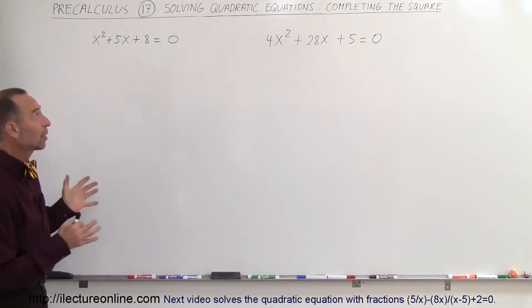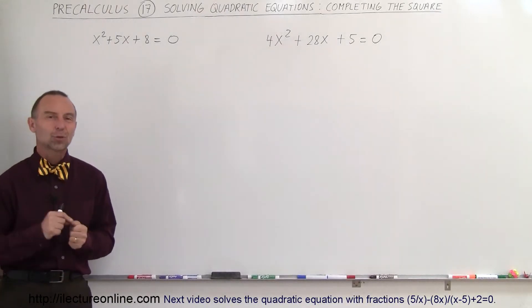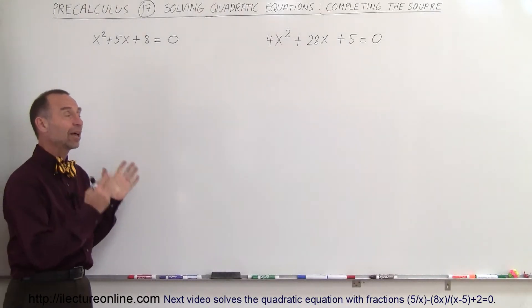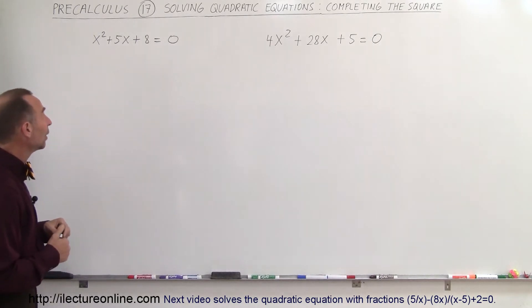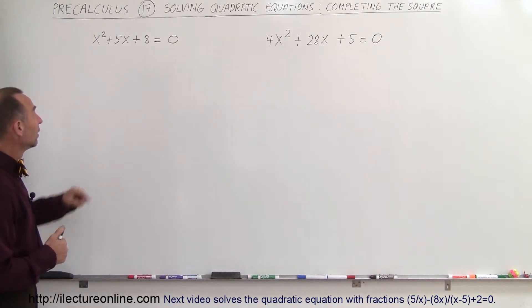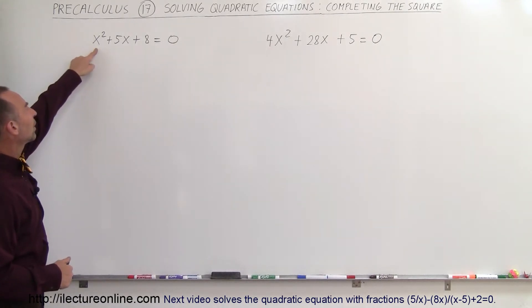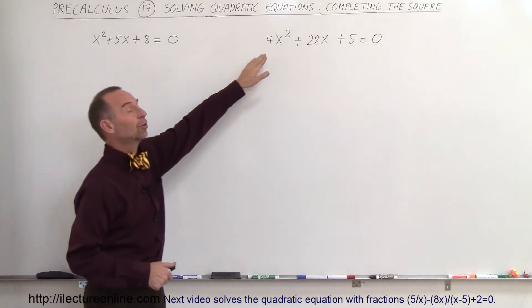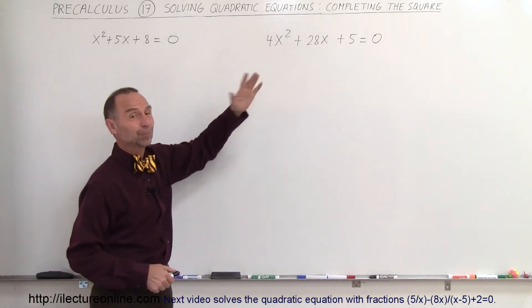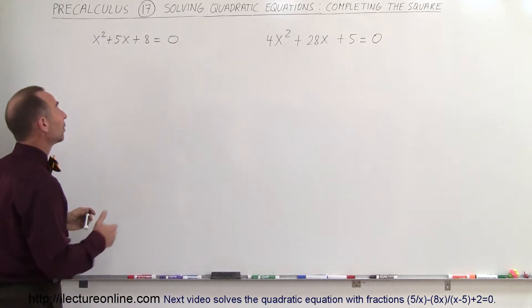Our next method to solve quadratic equations is what we call completing the square, and I have two examples for you here. Let's start with the simple one. Since we have a 1x² here, we don't have to do what we need to do with the other problem — that's why this is our simple one.